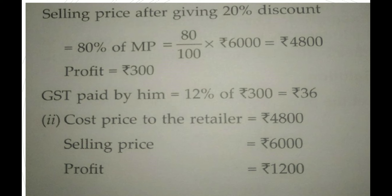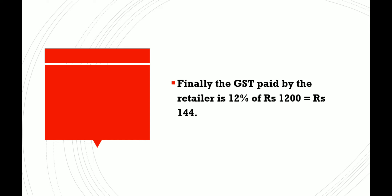Cost price to the retailer = Rs. 4800. Selling price = Rs. 6000. Profit = Rs. 6000 minus Rs. 4800 = Rs. 1200. Finally, the GST paid by the retailer = 12% of Rs. 1200 = Rs. 144.